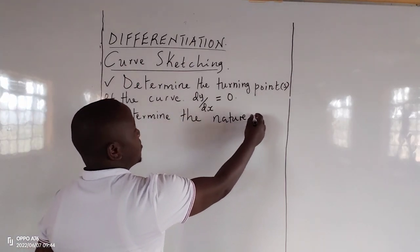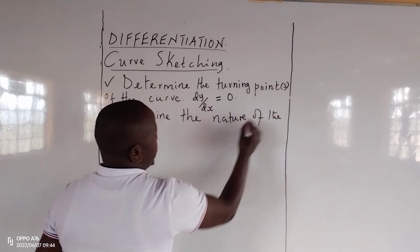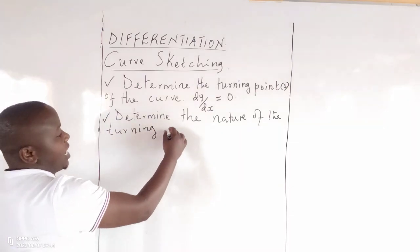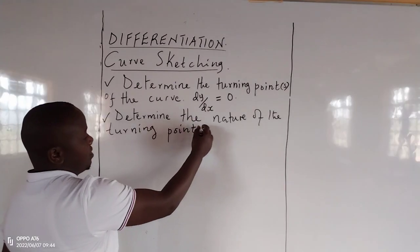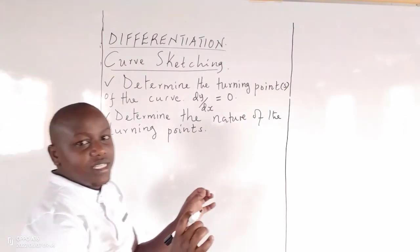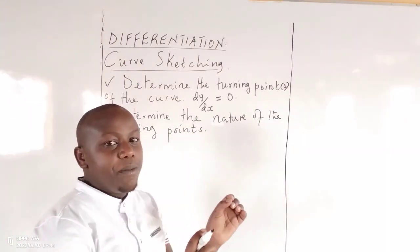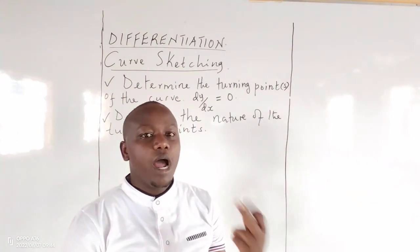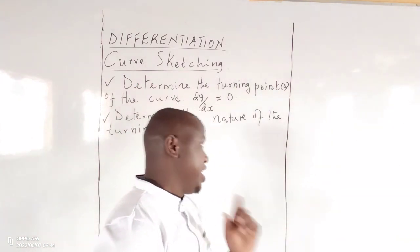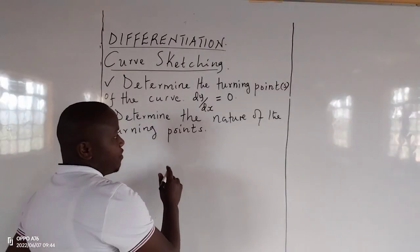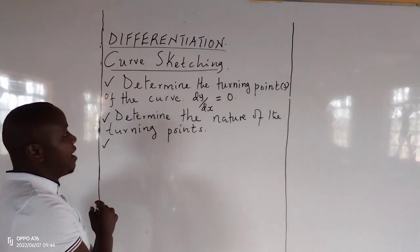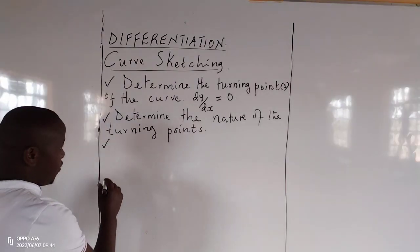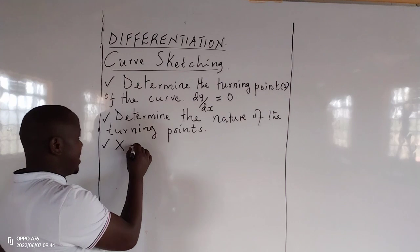Determine the nature of the turning points identified in the first step. When determining their nature, we might either get a maximum point, a minimum point, or a point of inflection. After identifying turning points and their nature, you move on to determine what you call the x-intercept.